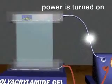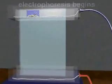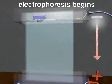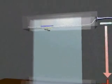In an electric field generated by a power supply, the negatively charged polypeptides migrate through the gel toward the positive electrode at the bottom of the gel.